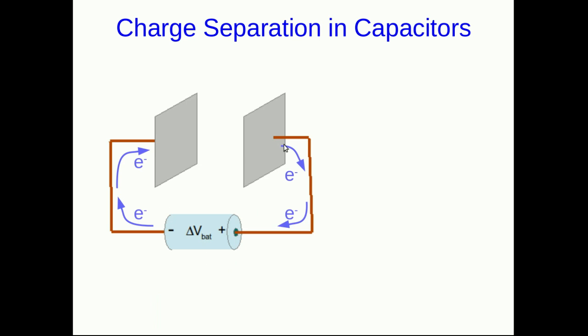Well electrons are going to be pulled off of this plate towards the negative terminal of the battery. And similarly electrons are going to be pushed out of the negative terminal of the battery onto this plate. And so we're going to get a build up of positive charge on one plate and negative charge on the other. And notice that all this negative charge is electrons arriving and they came from this plate. So we're guaranteed that these charges are of equal magnitude.